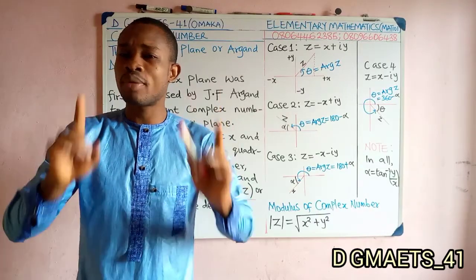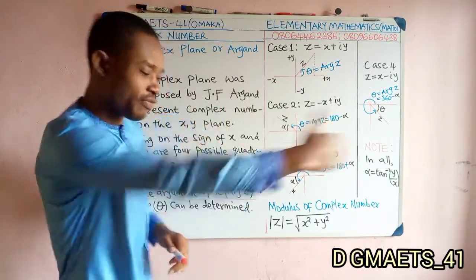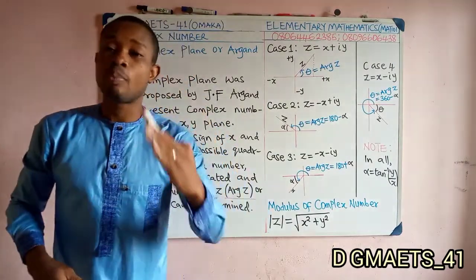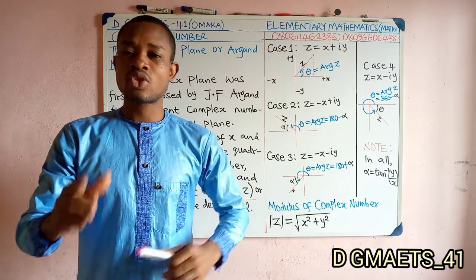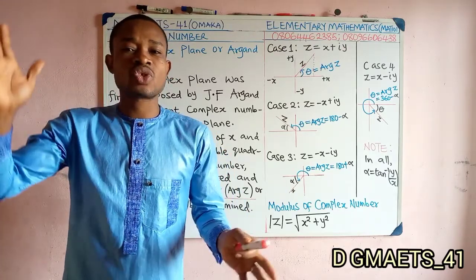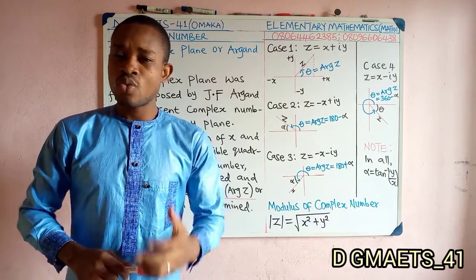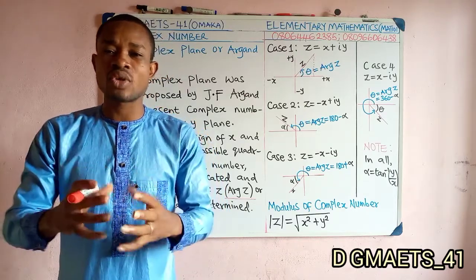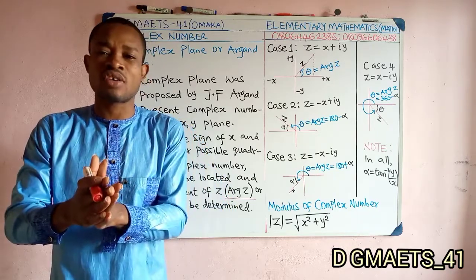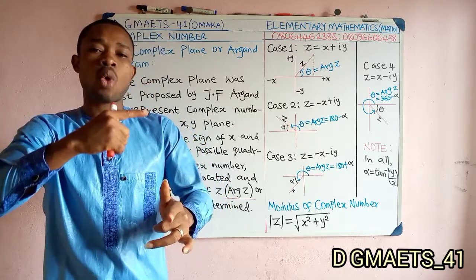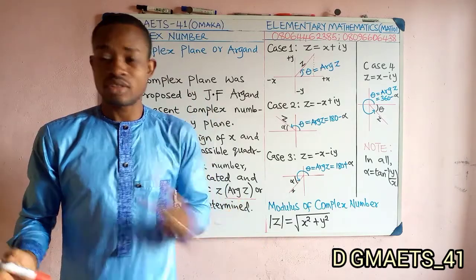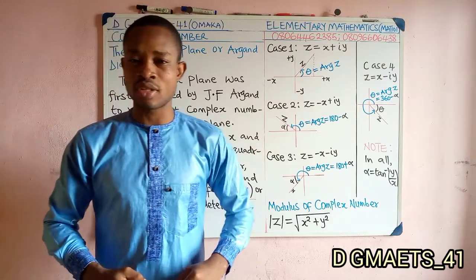Always remember that you measure this angle from the positive X-axis, anticlockwise, down towards the complex number line, then you stop. This is similar to what we learned in physics under vectors, where the angle of a vector is generally measured from the positive X-axis, turning anticlockwise down to the line of the vector. The same applies to the argument of Z, known as the polar angle.